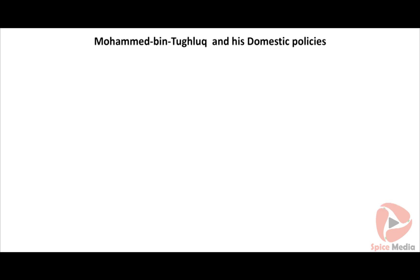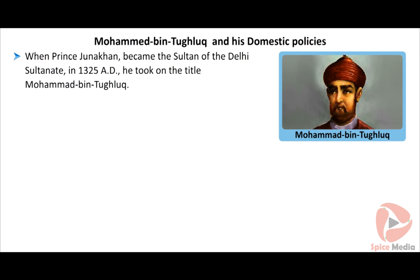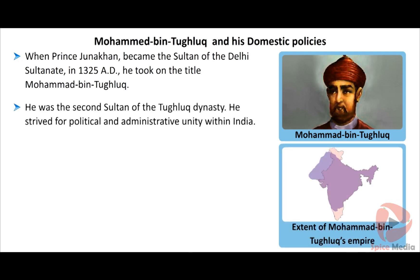When Prince Junakan became the sultan of the Delhi Sultanate, he took on the title Mohammed bin Tughlaq. He ruled for 26 years from 1325 to 1351 AD. He was the second sultan of the Tughlaq dynasty and strived for political and administrative unity within India.